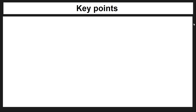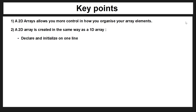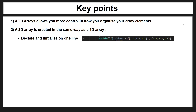Now you have a good idea of what a 1D array is. A 2D array is very similar but it allows you more control on how you organize your array elements — this will make sense once you see an example. Importantly, a 2D array is created in the same way as a 1D array. If you can remember that structure it will be used in all arrays.